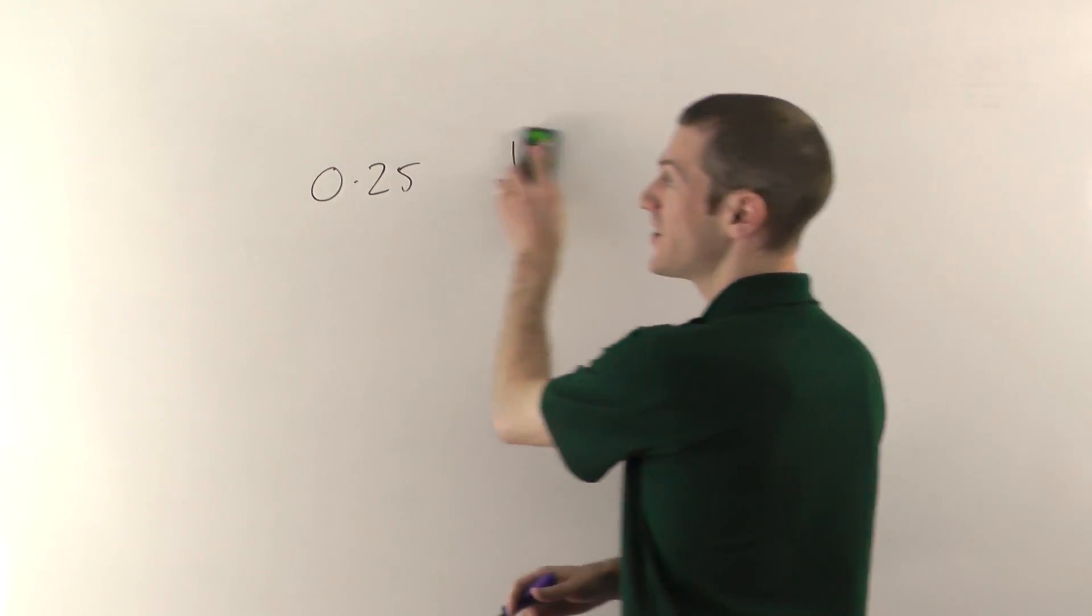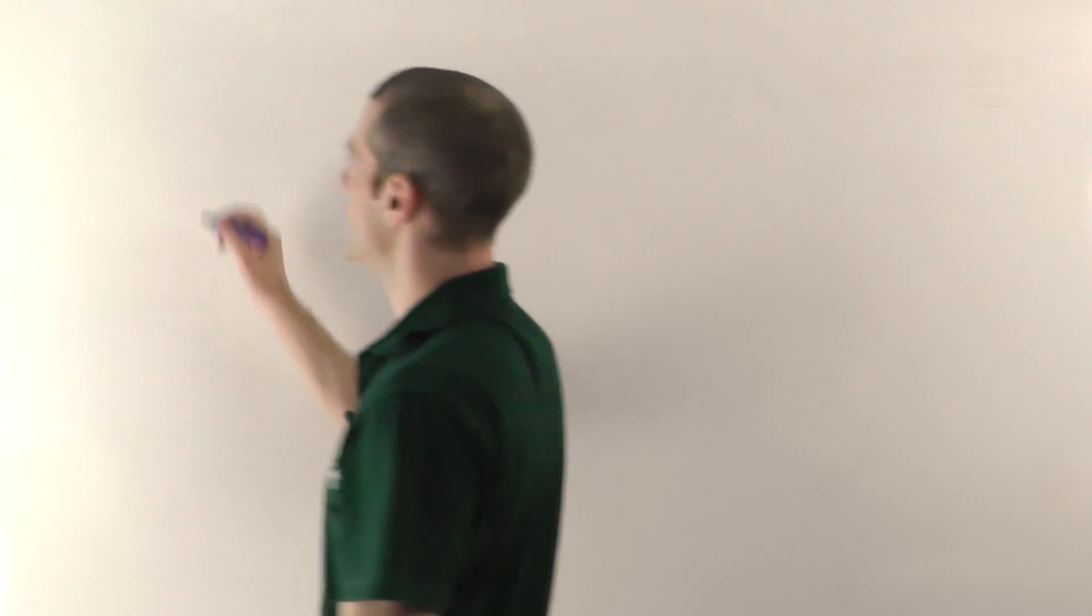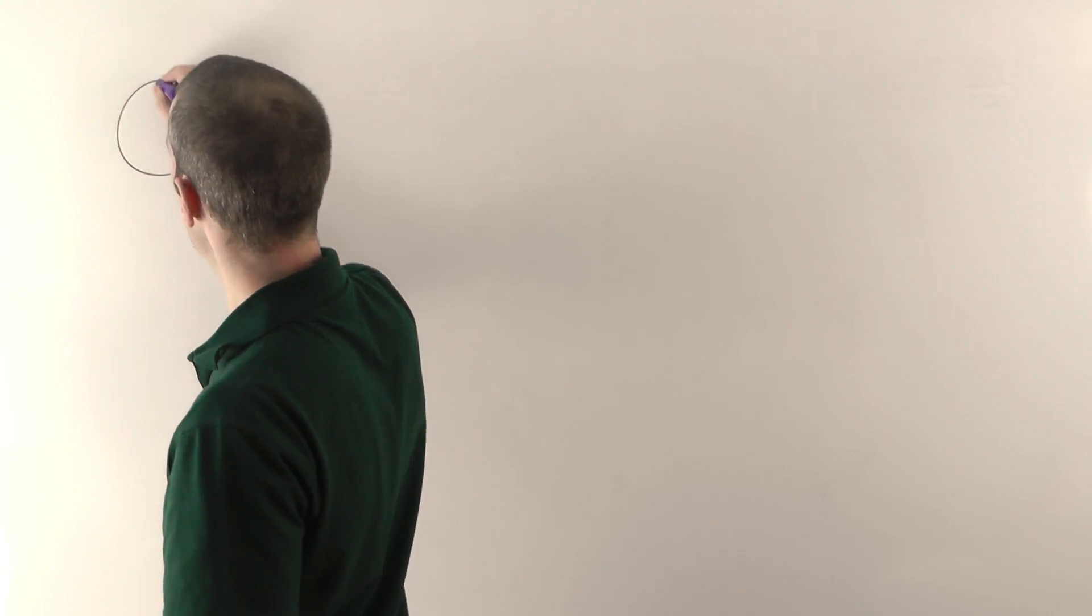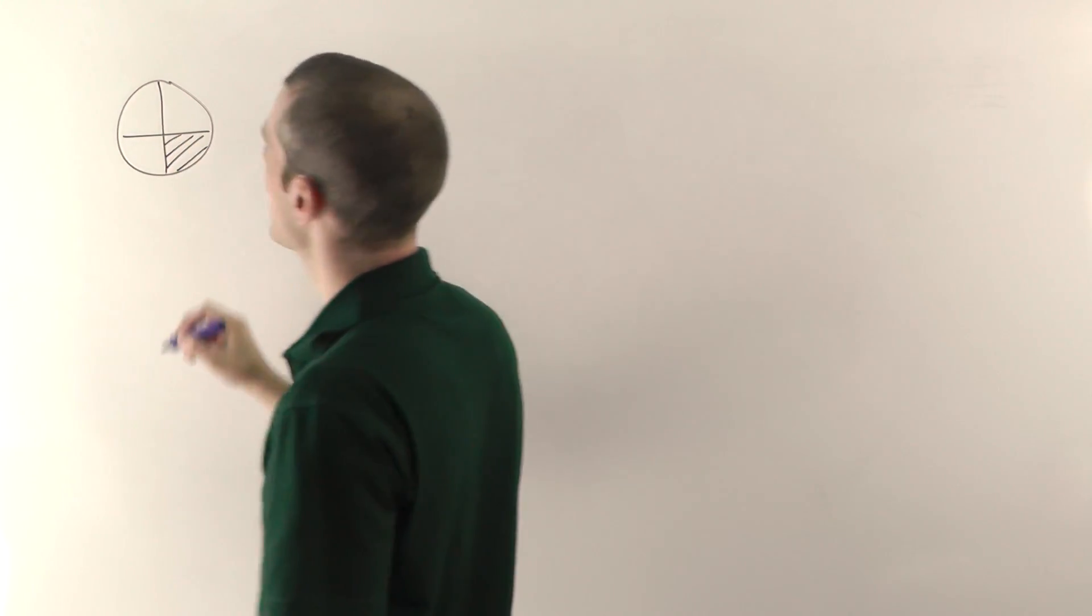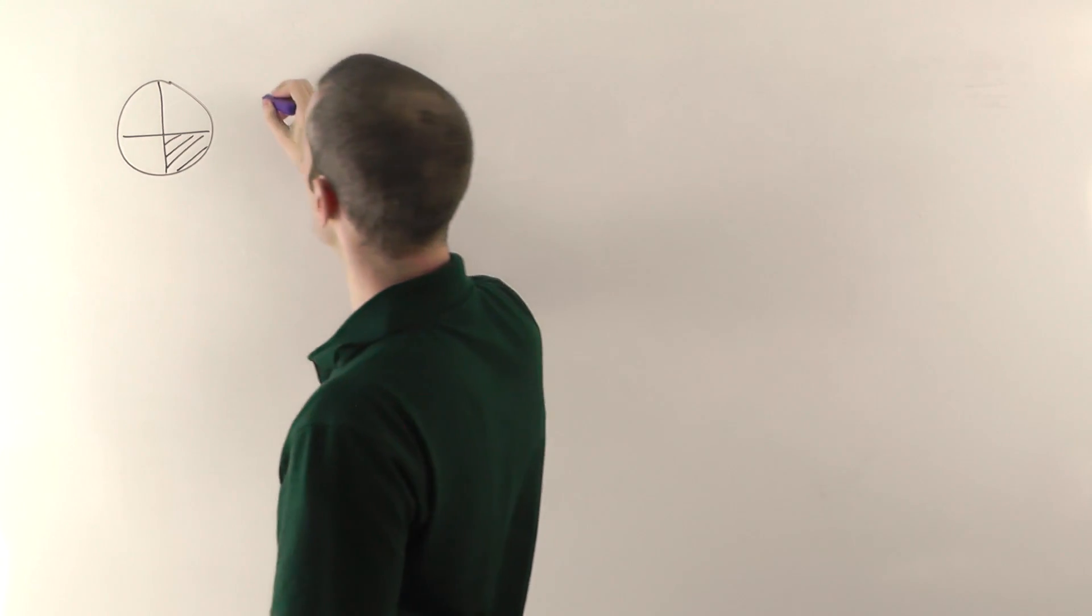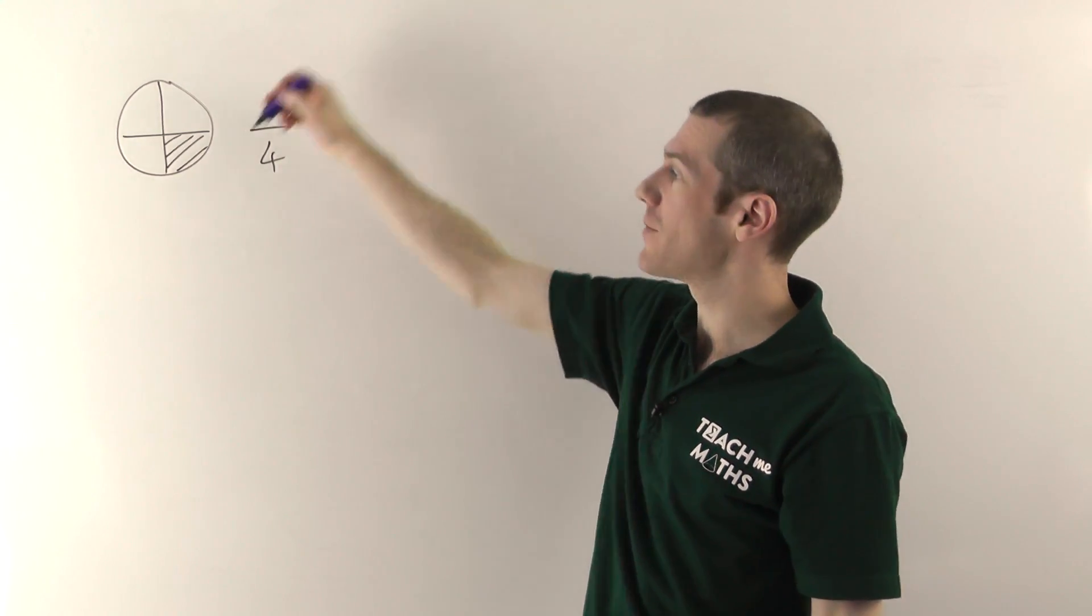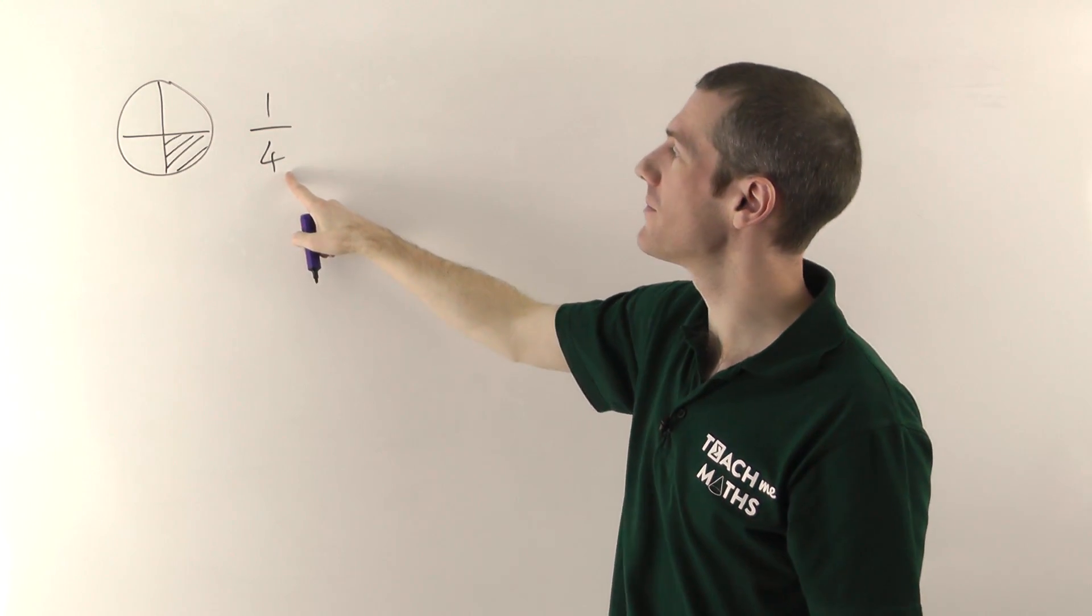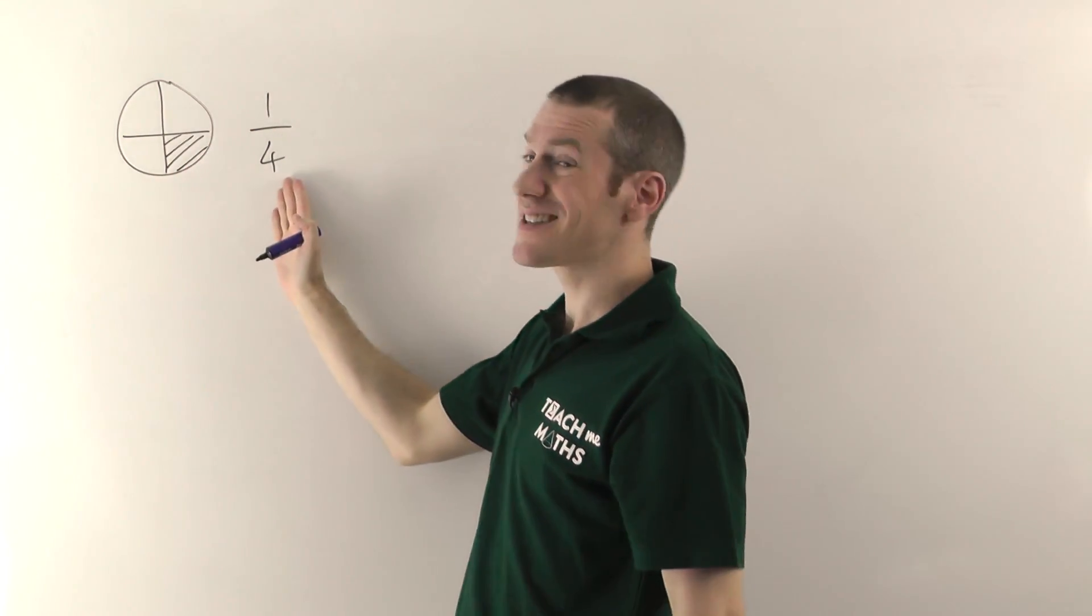So first of all then, what is a fraction? Well the basic concept is really very straightforward. It's just a piece of pie, or pizza, or whatever food you like. So if I eat a quarter of a pizza, you would write that like so. The number on the top just tells me how many bits I've got, and on the bottom that's how many pieces you've got all together. So that's a quarter.